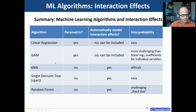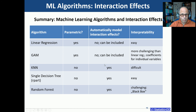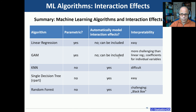Just a short summary of the algorithms we looked at. The two parametric models — linear regression and GAM — don't include interaction effects automatically, but it is possible if we explicitly model them in the formula. The other three nonparametric algorithms automatically include interaction effects, so we don't need to think about how to model them. You also see various degrees of interpretability: linear regression and a single decision tree are easy to interpret, while the other three are more difficult. I hope this was helpful — keep this in mind as one of many criteria when deciding between machine learning algorithms. All the best for your modeling.